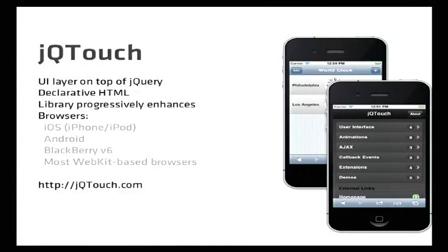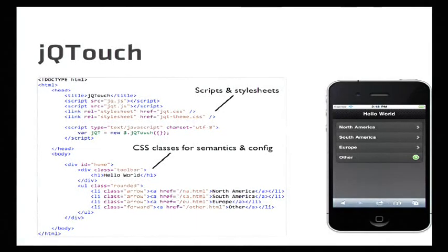JQTouch is a UI layer on top of jQuery. It is declarative HTML — it basically adds a bunch of CSS classes to your content and provides things like transitions between different cards, lists, disclosure icons, and more. It works on iOS, Android mostly, BlackBerry 6, and is designed to leverage WebKit-based effects. Here's what the actual source looks like: you add jQuery CSS, add CSS classes for semantics and configs, and get nicely styled divs with disclosure icons that you can attach different transitions to.